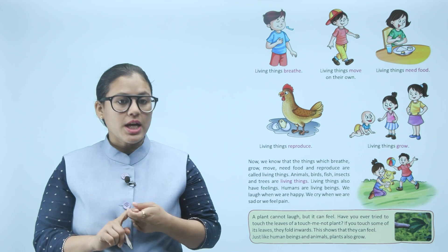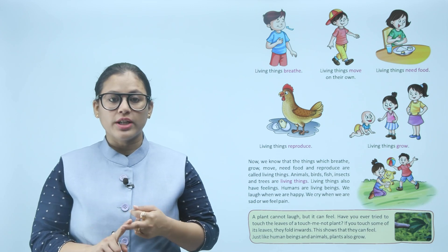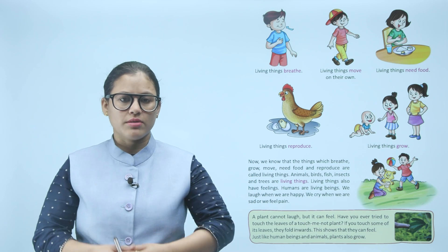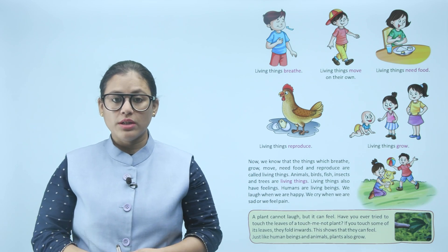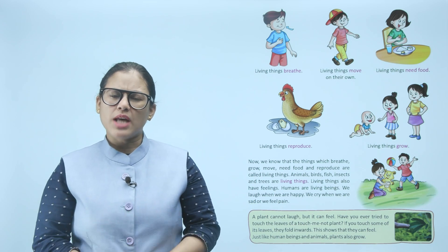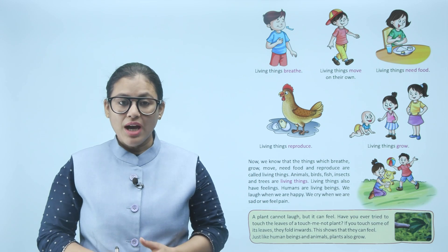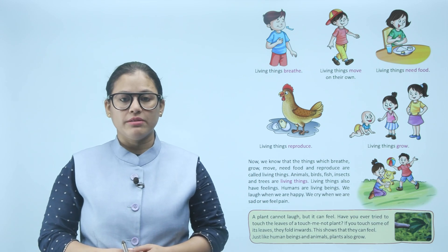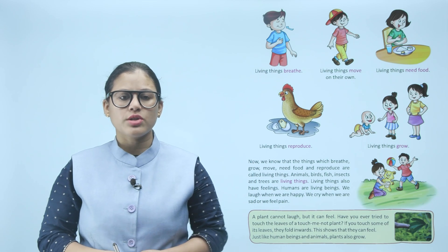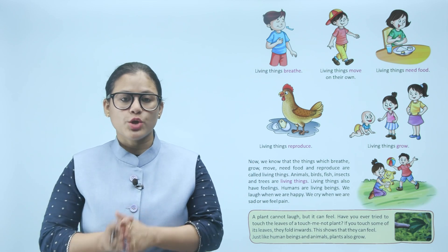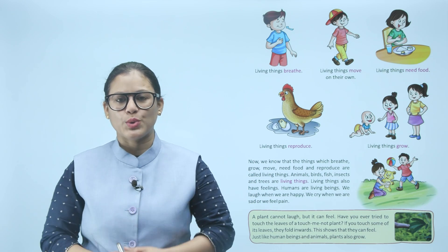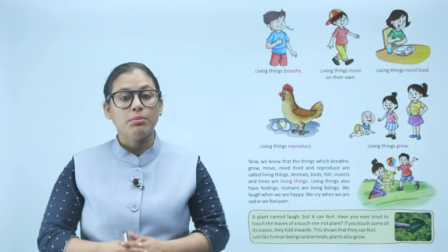Jo cheezein breathe karti hain, grow karti hain, move karti hain, khane ki zaroorat hoti hai, reproduce karti hain — woh living things hoti hain. Living things ki feelings bhi hoti hain. A plant cannot laugh, but it can feel. Have you ever tried to touch the leaves of a touch-me-not plant? If you touch some of its leaves, they fold inwards.